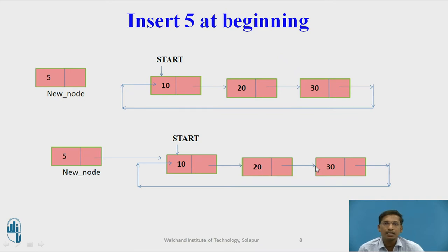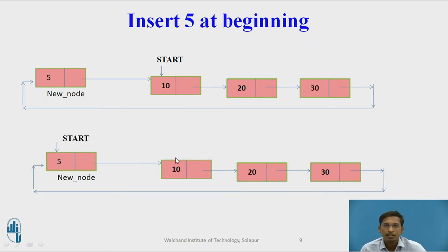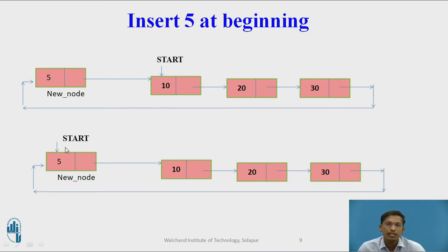Now, suppose we want to insert a new node with value 5 at the beginning of this singly circular linked list. First, allocate memory and set value 5 in the data part. Second, set the new node's next to start. Third, traverse from start to the last node and set the last node's next to the new node. Fourth, update start to point to the new node.